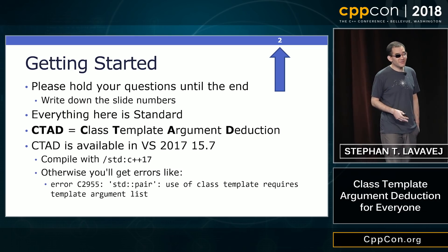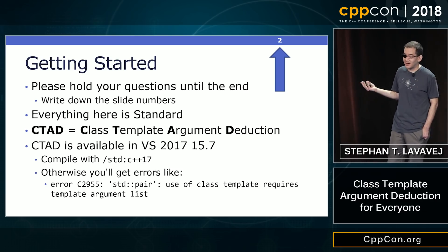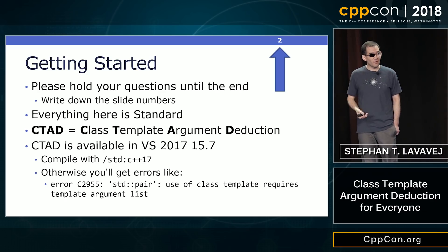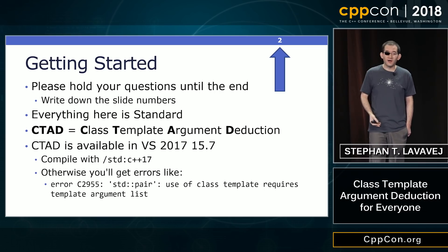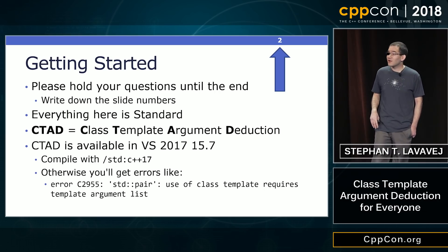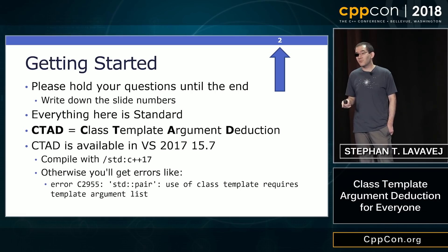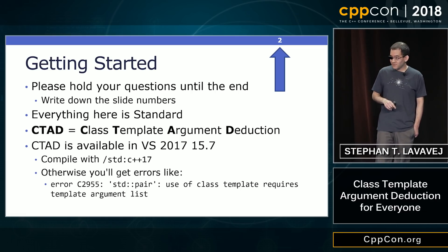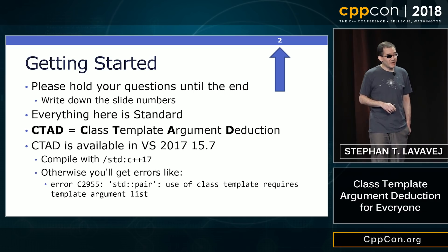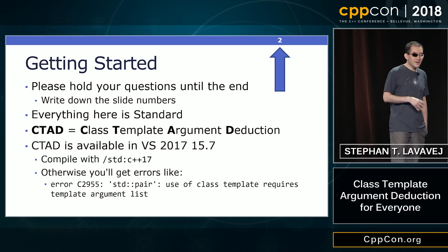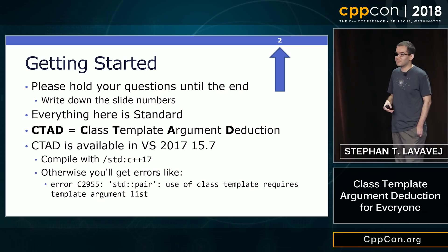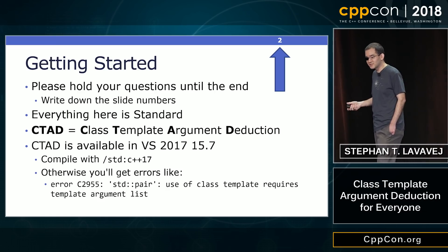This feature is available in all of the major compilers right now. In Visual Studio 2017, it shipped in its complete form in update 15.7. The current update is 15.8. But you do need to compile with the C++17 compiler option, which is not the default in the IDE. Otherwise you're going to get an error that basically says you need to provide the template arguments in C++14. If you see that error, you just need to go into your properties and add C++17 or your build system.